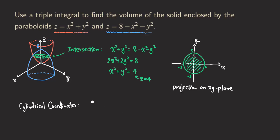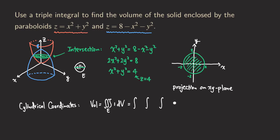We need to set up the triple integral to find the volume of the solid. Calling the solid E, the integrand will be 1 with dV. We can write it as an iterated integral: the integrand is just 1, so we write dz, and since we use cylindrical coordinates the remaining part is r dr dθ — that's the dA.